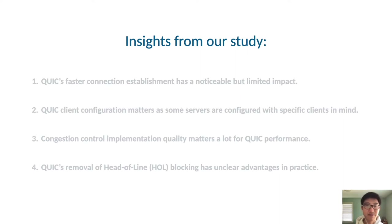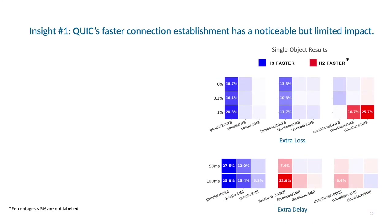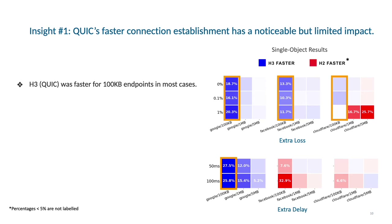In this presentation, I will present four insights from our study. For the first insight, I will focus on how QUIC's faster connection establishment time has a noticeable but limited impact on performance. The figure shown here compares HTTP/2 to HTTP/3 performance for numerous production endpoints. If a cell has a blue color and a 20% label, that means HTTP/3 was 20% faster than HTTP/2 for that endpoint. These graphs are divided by extra loss and extra delay, representing the network conditions we benchmark with. You can see how HTTP/3 was faster for 100KB endpoints in most cases, showing how QUIC's protocol design improves total latency for small-sized requests.